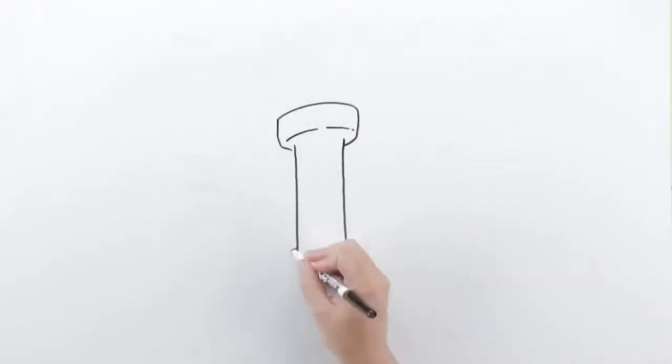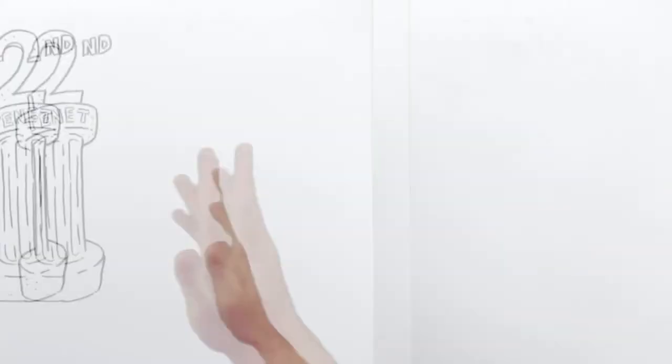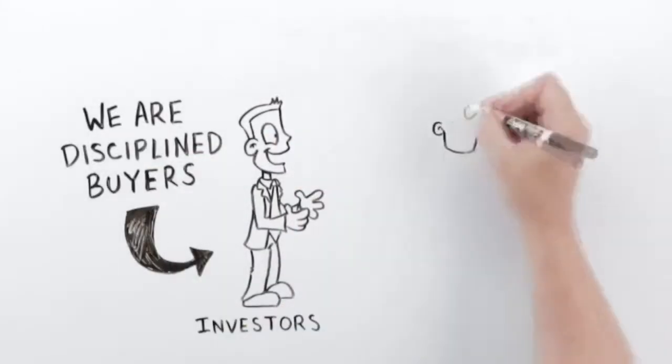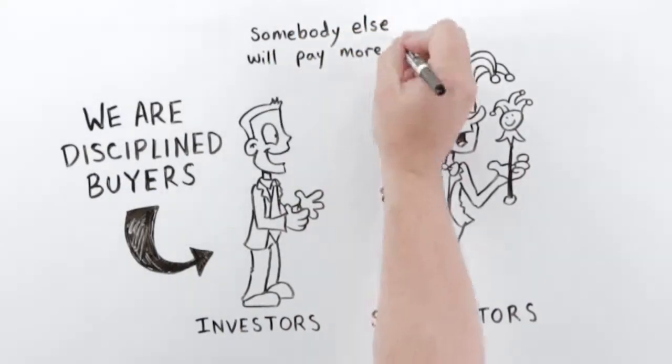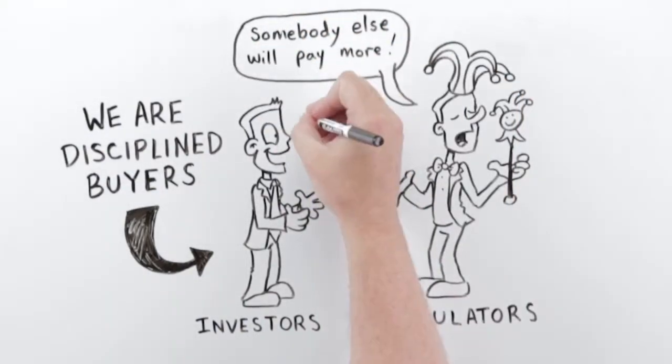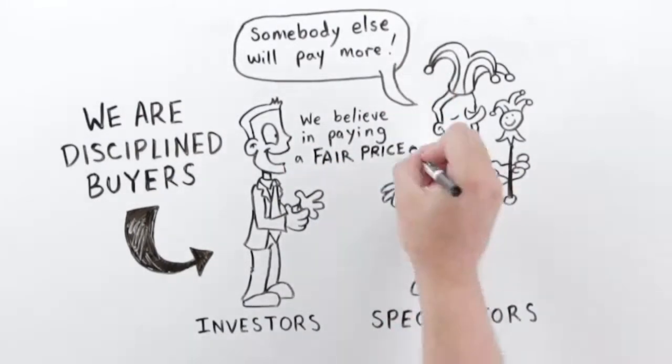The second tenet of our investment philosophy is to ensure we are disciplined buyers. At DGI, we are investors, not speculators. Speculators believe in the greater fool theory. Somebody else will pay more. We believe in paying a fair price based on a reasonable assessment of the value of the business. Period.